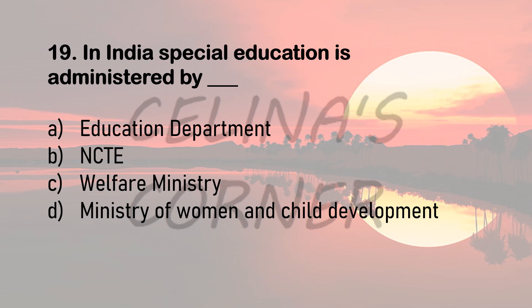Question 19. In India, special education is administered by dash — Education department, NCTE, Welfare Ministry, or Ministry of Women and Child Development? The correct answer is Welfare Ministry. This ministry is no longer known by that name; it is now called the Ministry of Social Justice and Empowerment. Before 1998 it was called Welfare Ministry, and now it is the Ministry of Social Justice and Empowerment. So if in the exam these words have been replaced by Ministry of Social Justice and Empowerment, make sure you select the correct answer.